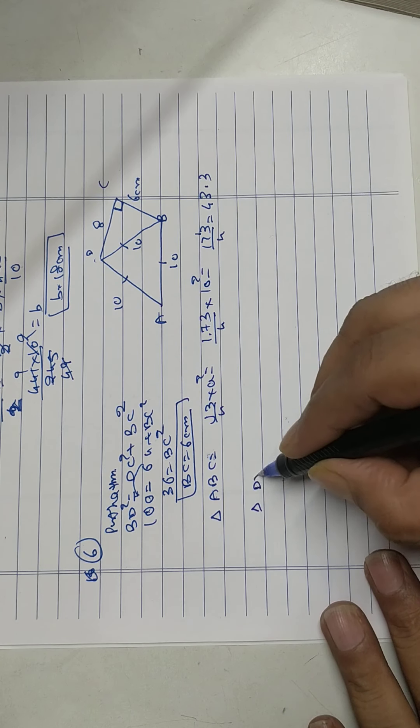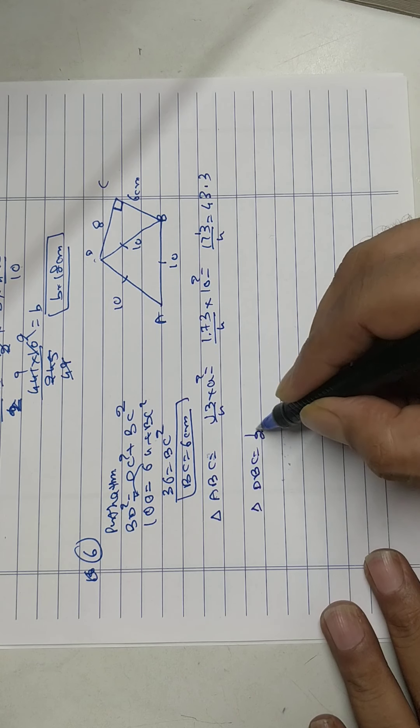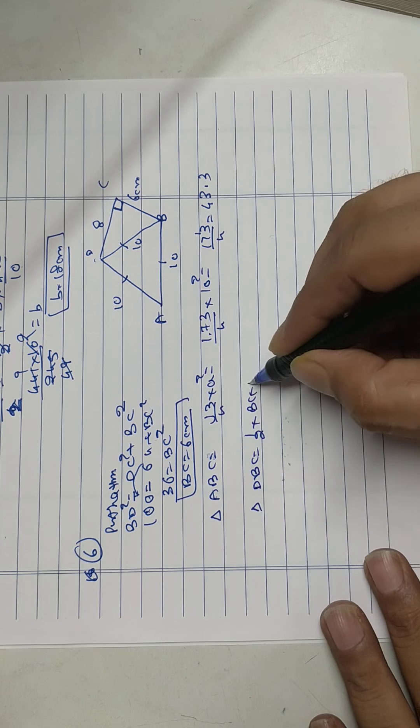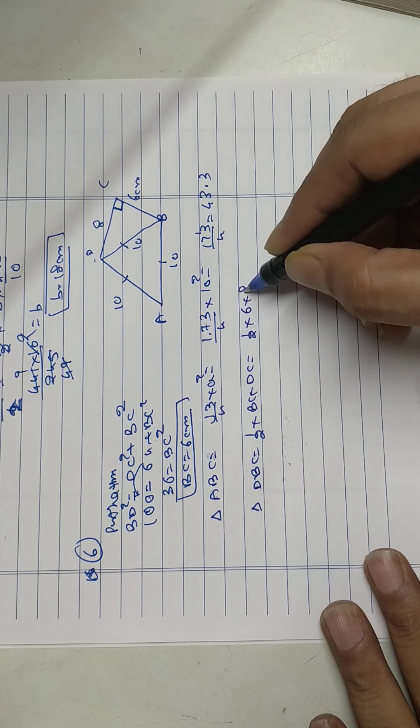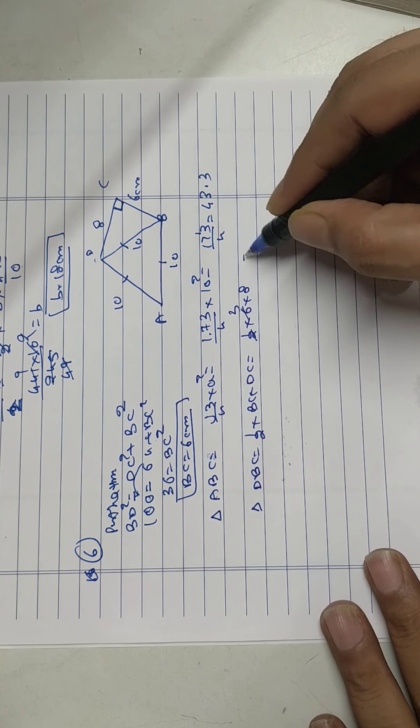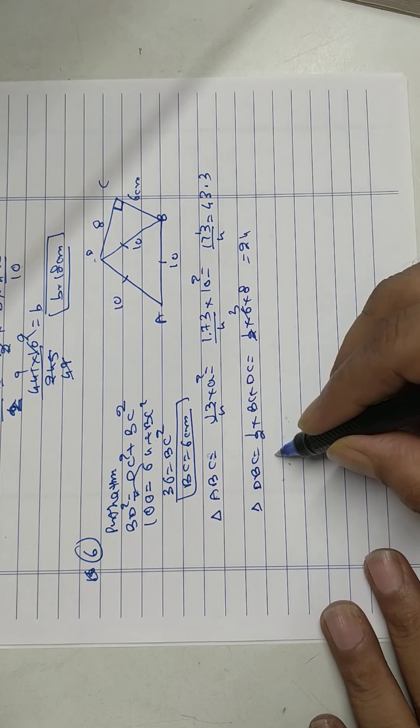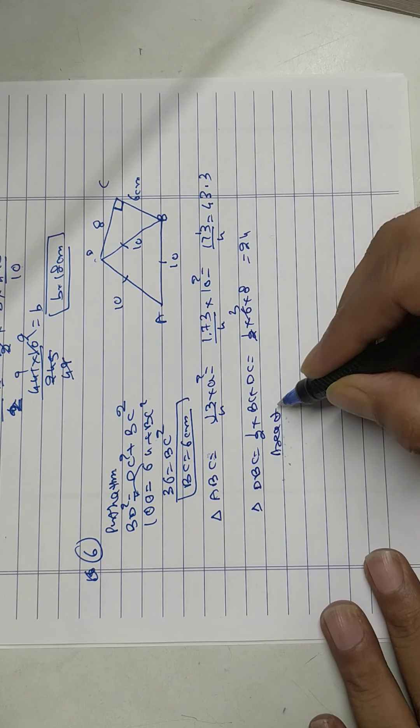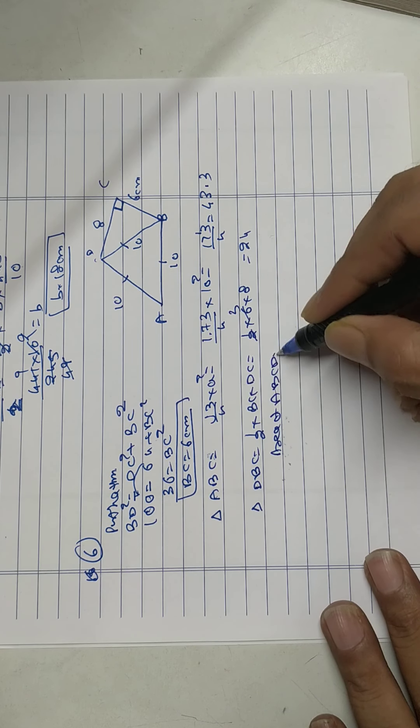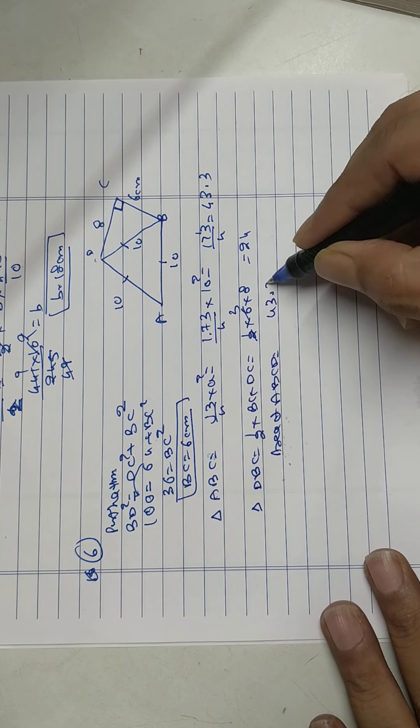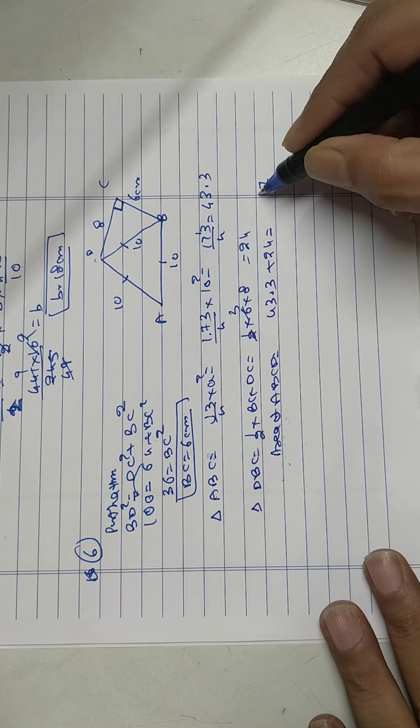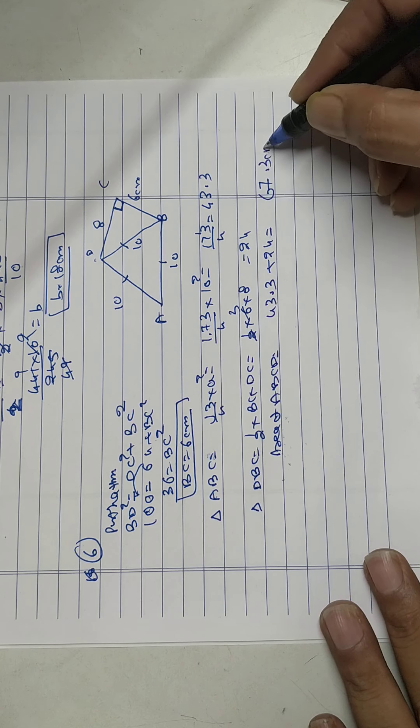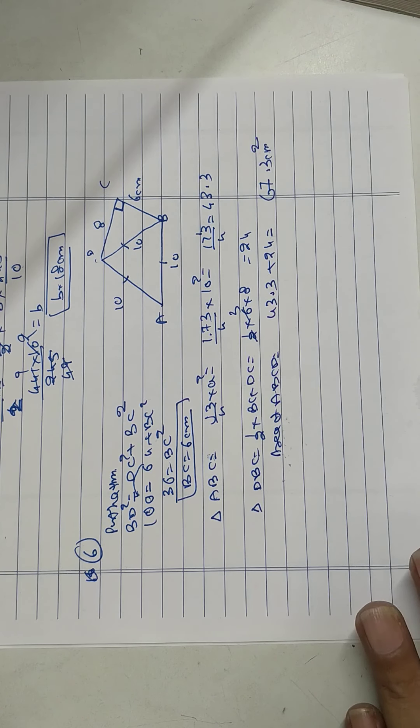Now find area of triangle DBC. Half into BC into DC. Half into 6 into 8, that is 24. So area of ABCD is 43.3 plus 24 equals 67.3 centimeter square.